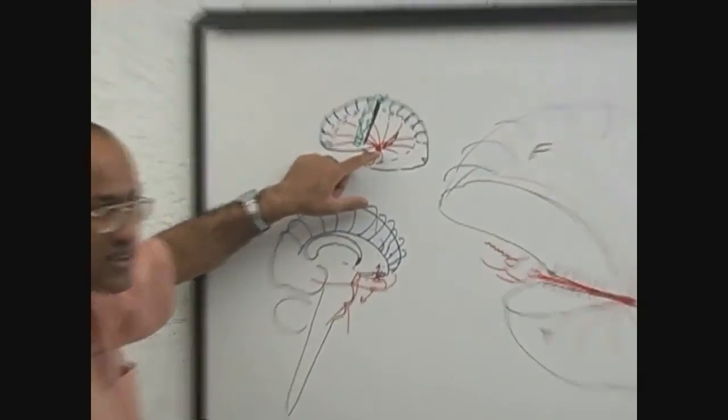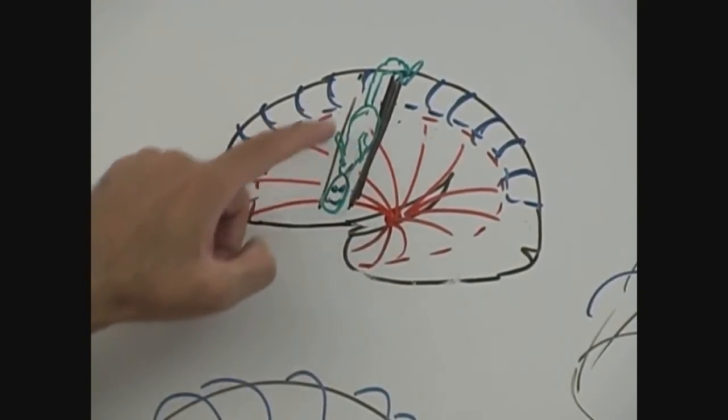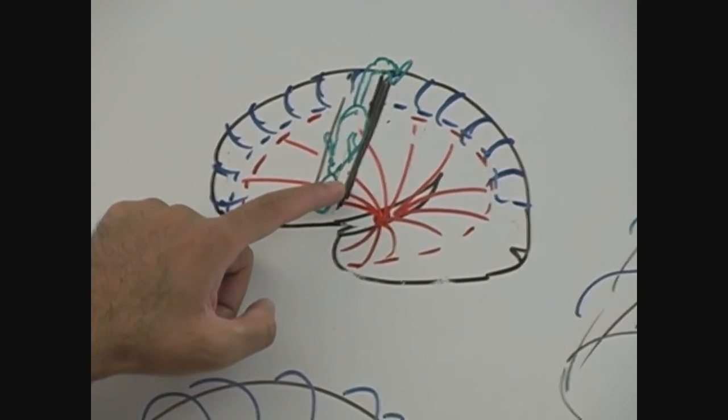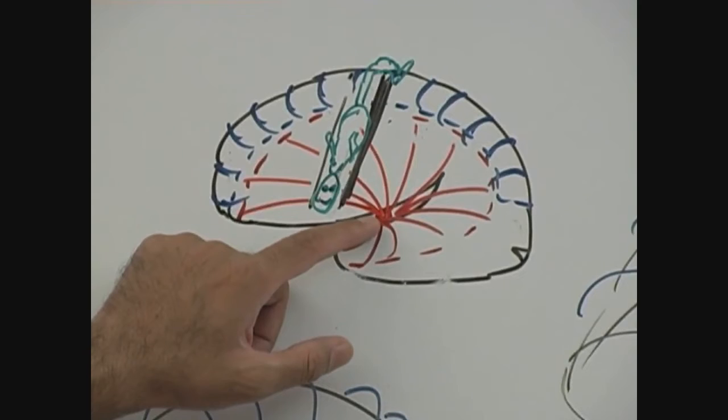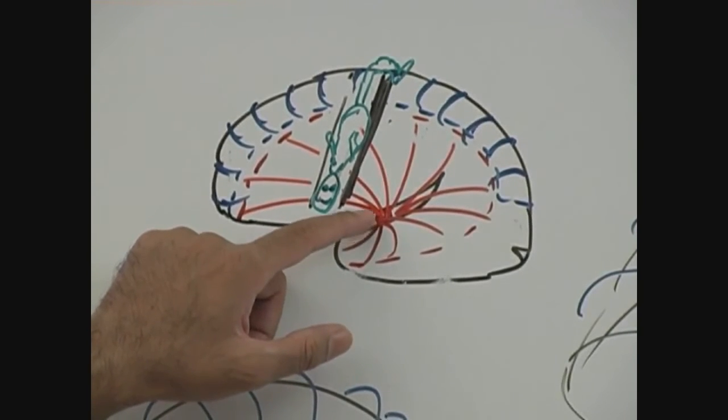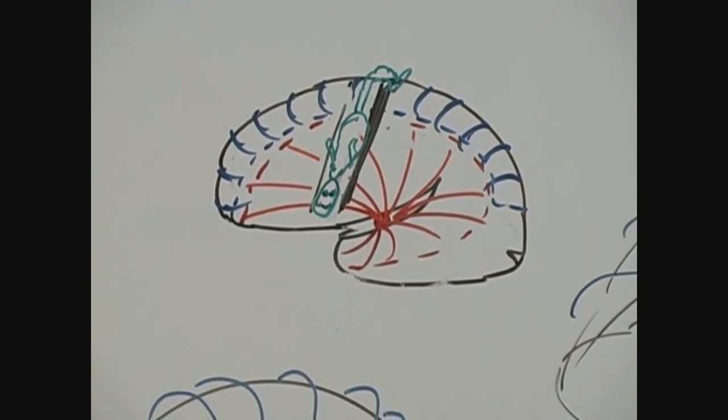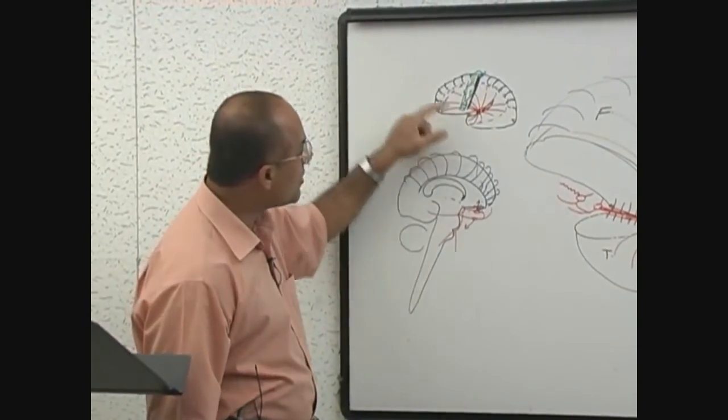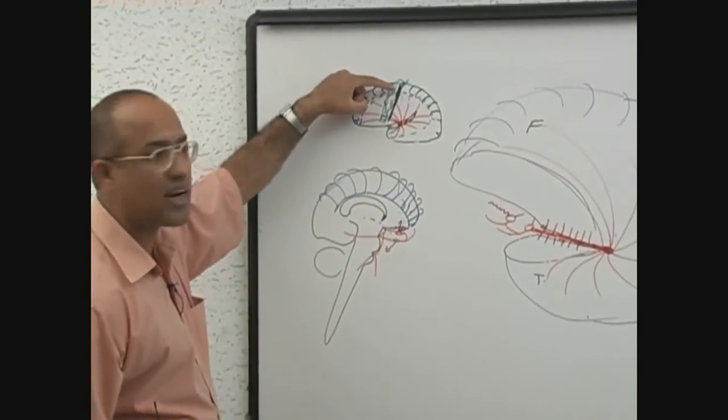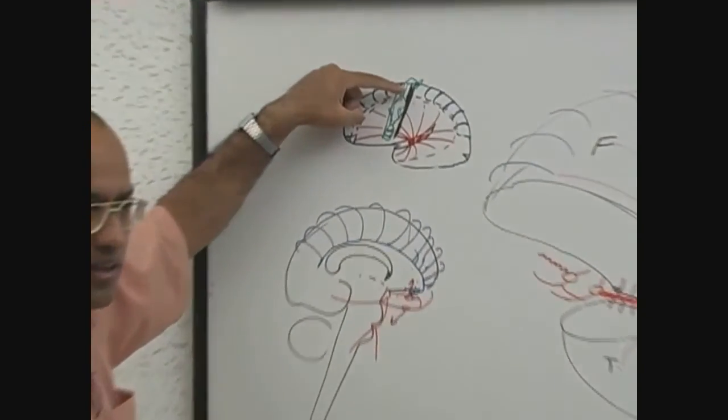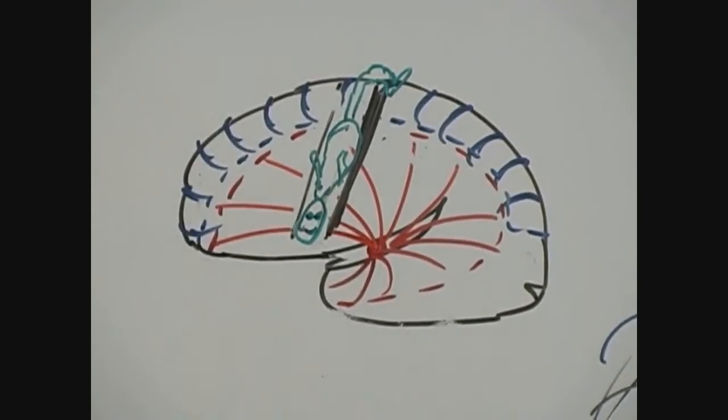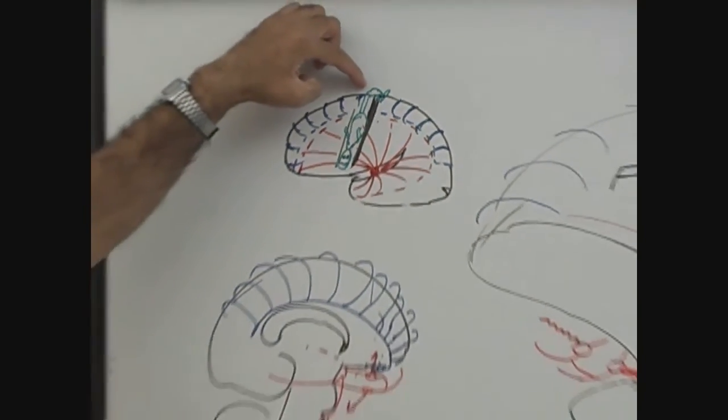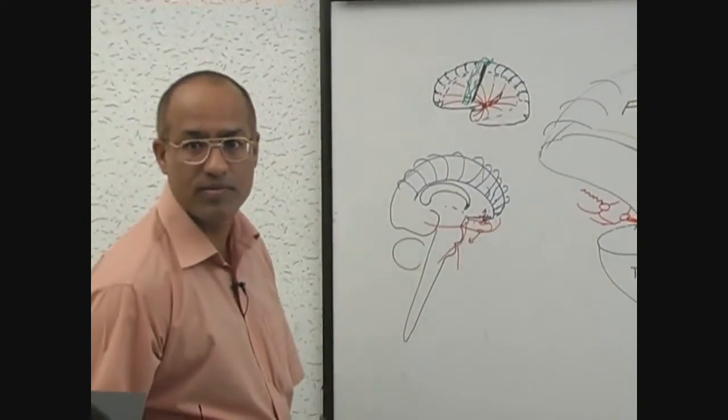So if middle cerebral is blocked, then this area of the body will be weak. Paralysis of this area of the body will occur. If middle cerebral artery of left side is blocked, then paralysis on the right side of the body will be there, but foot and leg will be spared. But if someone develops left anterior cerebral artery occlusion, then right foot and leg will be weak or paralyzed, but rest of the body will not be. Am I clear?